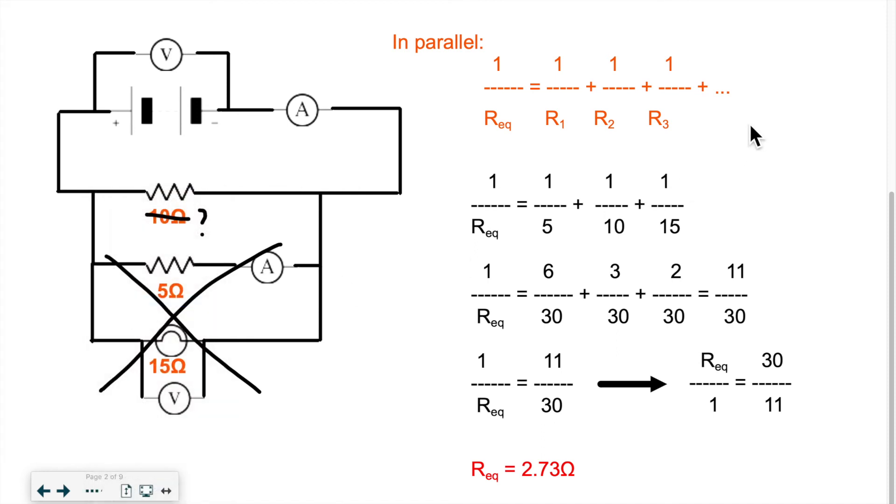Well you have it here on the right hand side. So the mathematical equation, the setup, is 1 over R equivalent is equal to 1 over R1 plus 1 over R2 plus 1 over R3 plus 1 over as many resistors as you have. Now if we replace with the values that were in my setup here, I'd have 1 over 5 plus 1 over 10 plus 1 over 15.